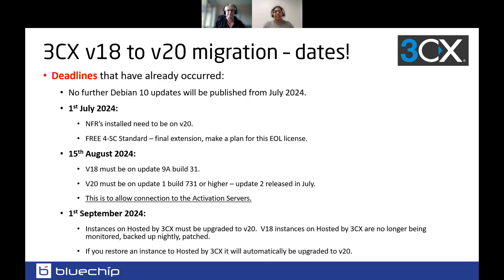Let's recap the deadlines that have already occurred — it's crucial to ensure your systems are compliant. If you haven't made these upgrades, prioritize them to avoid disruption. Debian 10 was end of life earlier this year with no further updates — this was the Linux version that 3CX v18 was built on. From 1st of July, all NFRs need to be upgraded to v20. NFRs still on v18 will be revoked, and the 4SC free standard license needs to be upgraded to v20 as well, as your free key will only support 2SC.